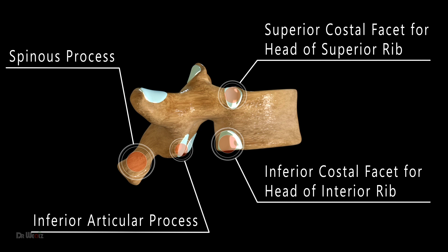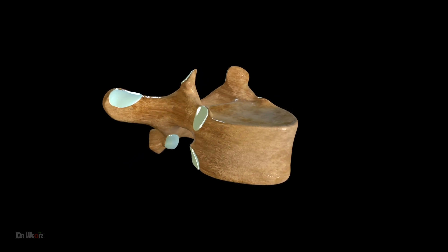On each side of the thoracic vertebrae, there are superior and inferior articular processes, which articulate with the adjacent vertebrae. The superior articular process is directed posteriorly and slightly laterally, while the inferior articular process is directed anteriorly and slightly medially. The superior and inferior costal facets, located on the lateral sides of the thoracic vertebrae, provide attachment points for the ribs. The superior costal facet articulates with the head of the rib of the same number, while the inferior costal facet articulates with the head of the rib one number below.